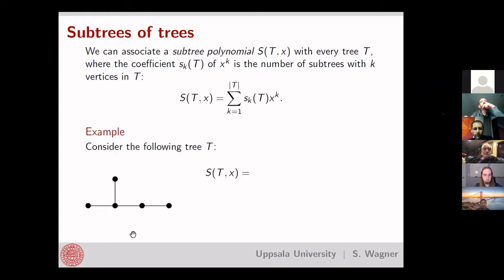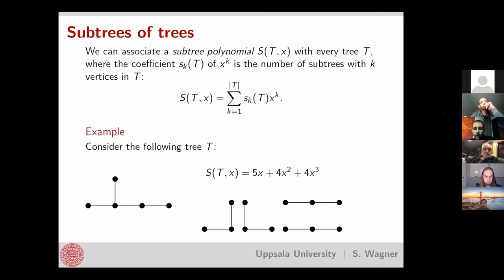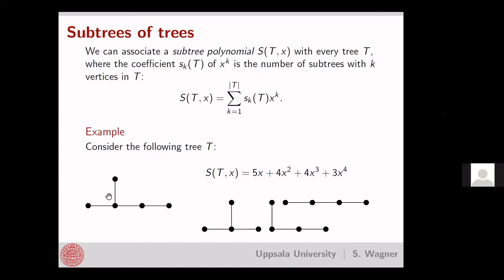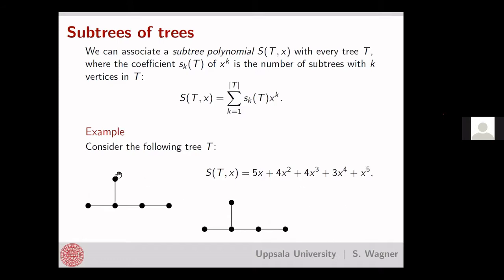For example, here is a simple tree with five vertices. Its subtree polynomial has five subtrees of order one (the five single vertices), four subtrees of order two (one per edge), four subtrees of order three, three subtrees of order four (obtained by removing one leaf each), and finally one subtree of order five — the whole tree itself. So the leading coefficient of the polynomial is always one.